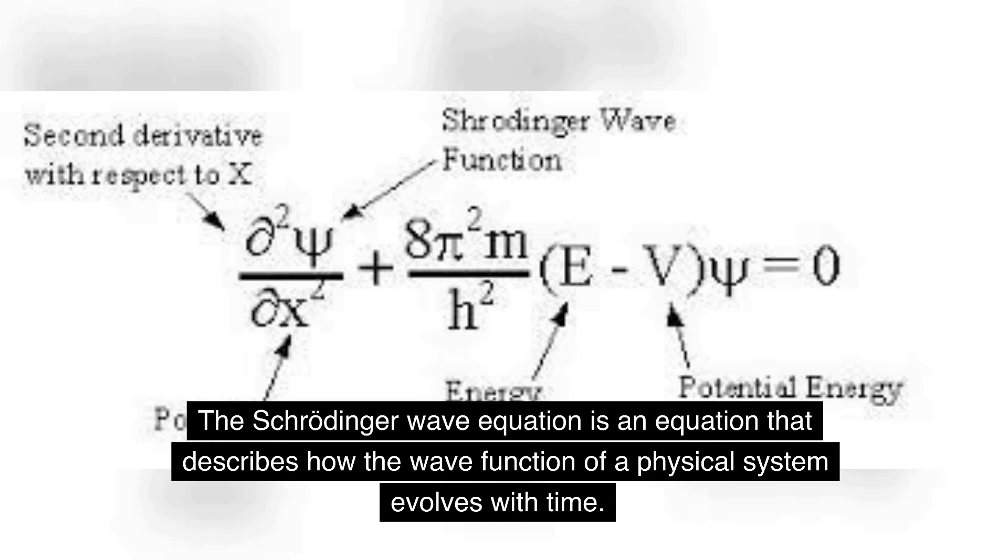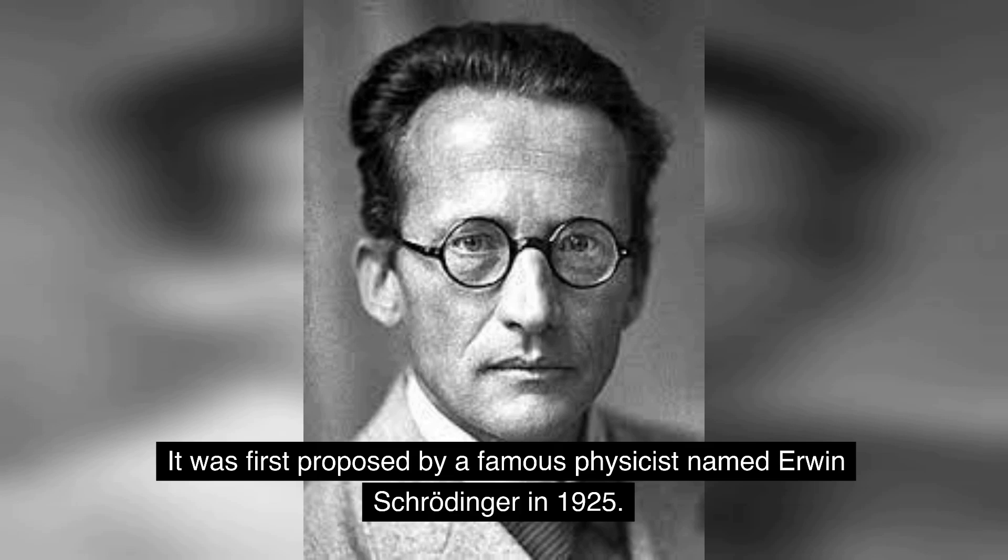The Schrödinger wave equation is an equation that describes how the wave function of a physical system evolves with time. It was first proposed by a famous physicist named Erwin Schrödinger in 1925.